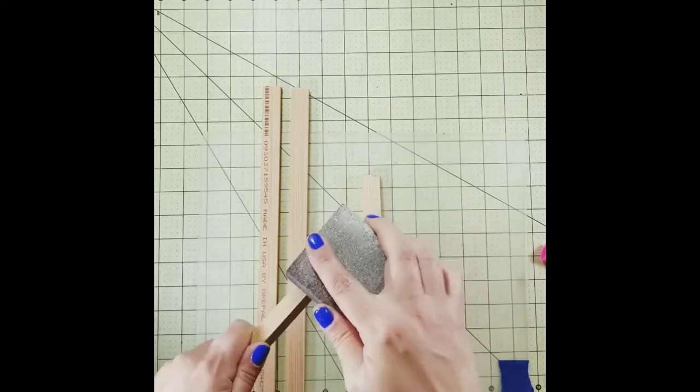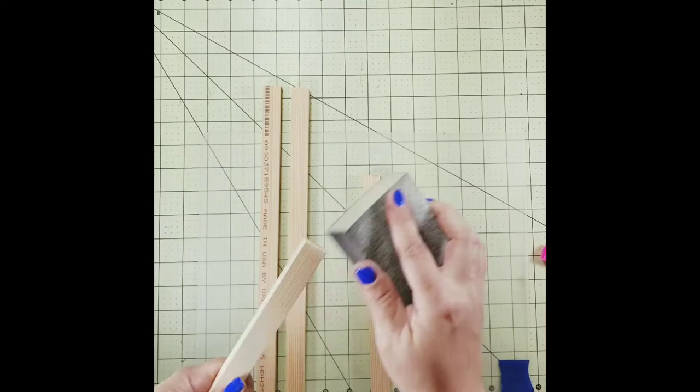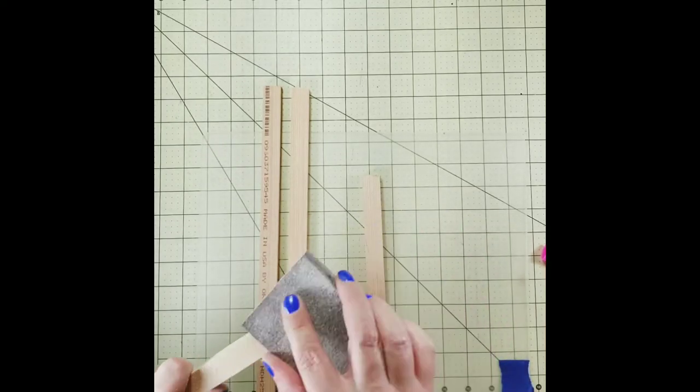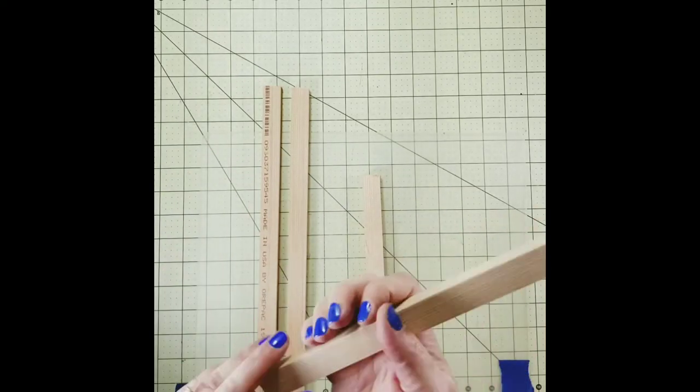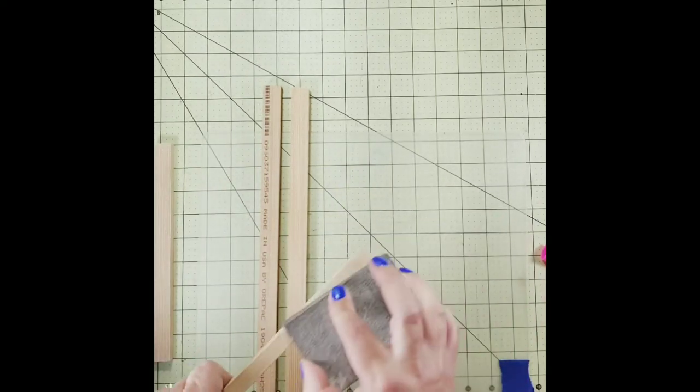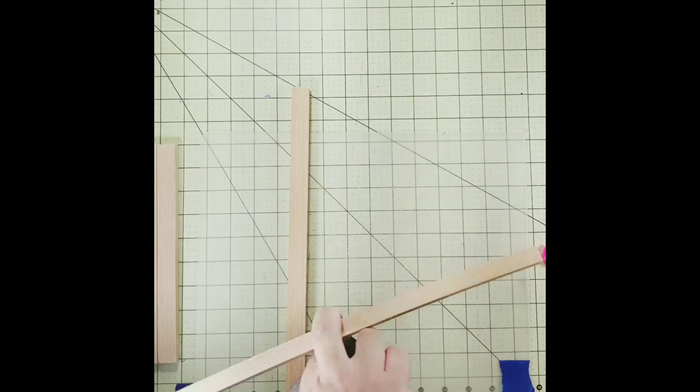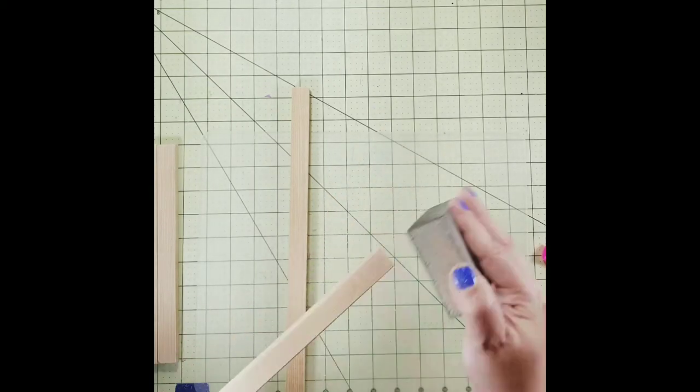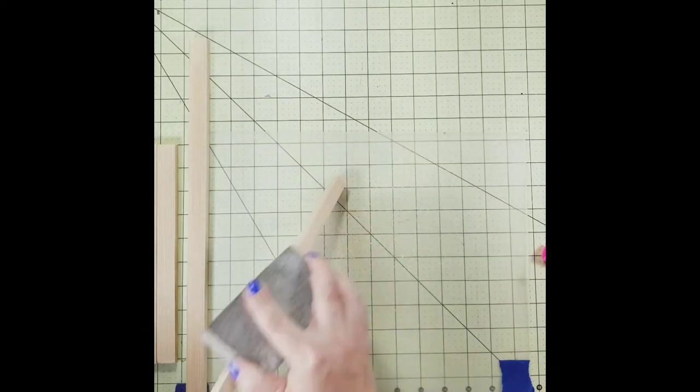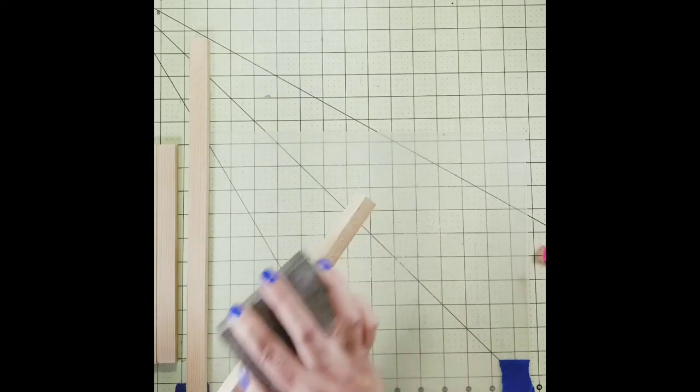Next, we're going to create our frame for our piece. I just picked up this decorative wood for finishing off cabinets. It's about three quarter inch by one inch and I just cut it with my handsaw. I just picked it up at my local hardware store and I'm just using a sanding block to smooth out all the surfaces. You can use any small piece of wood to make a frame for your piece.